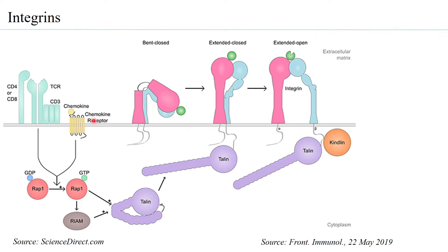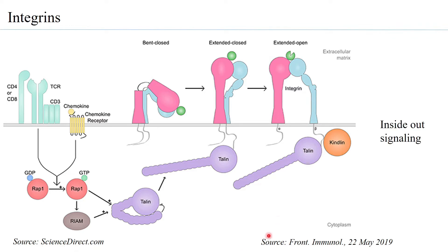You can also have chemokine binding to the chemokine receptor, which can elicit the same signal transduction leading to activation of the integrins. This kind of effect is what is called inside-out signaling, and this is happening in a T cell.